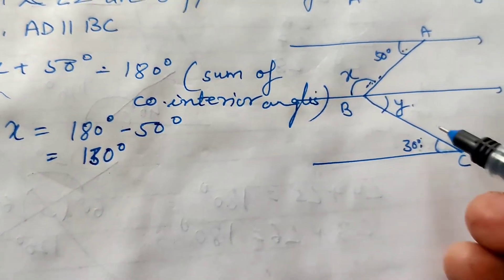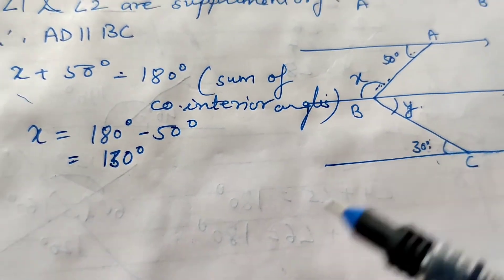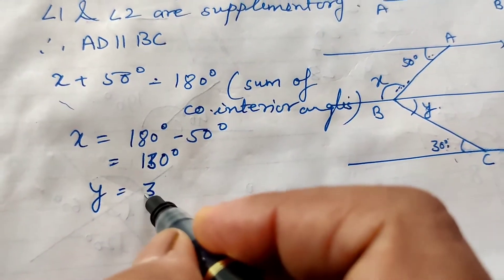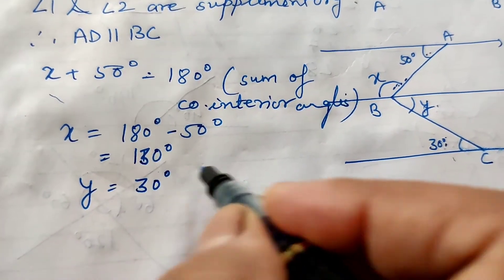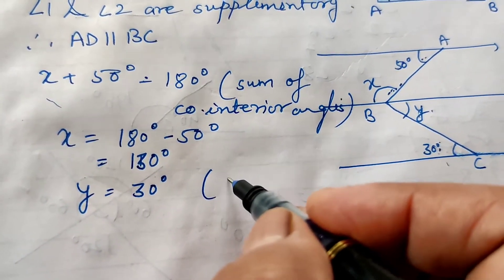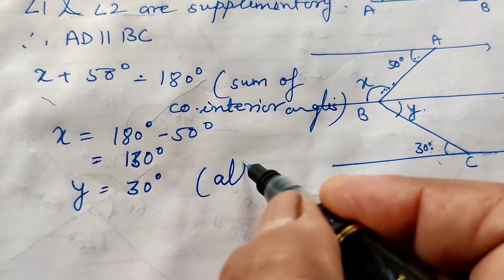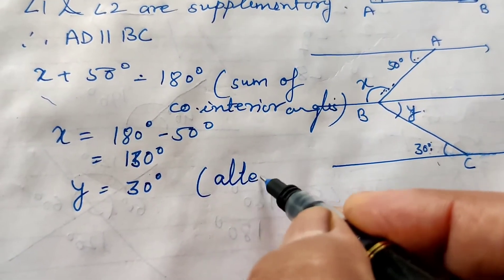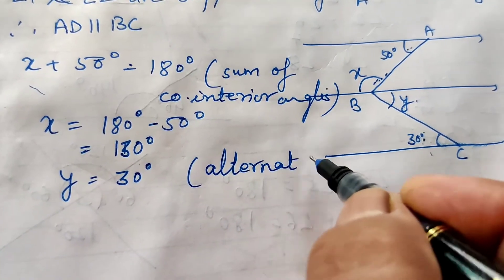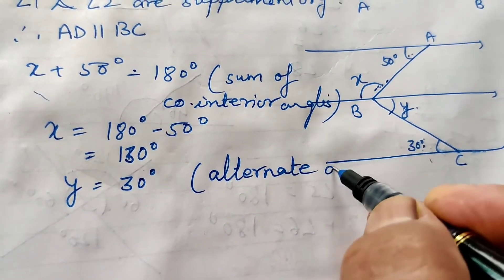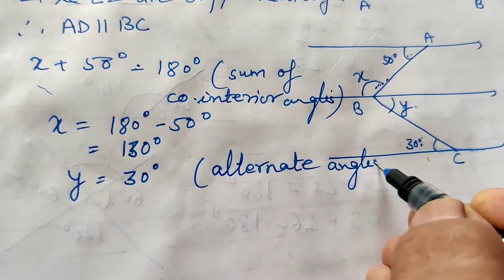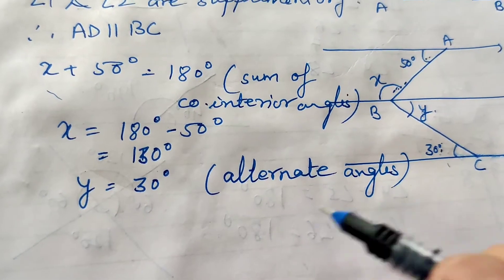We can write Y equals 30 degrees because they are interior alternate angles — they are alternate to each other, so we can directly state alternate angles. Both angles are found.